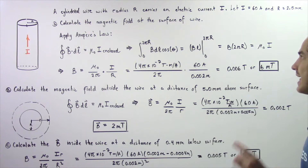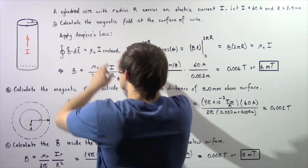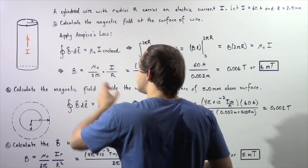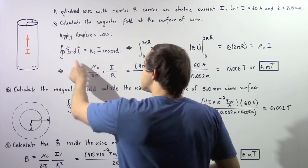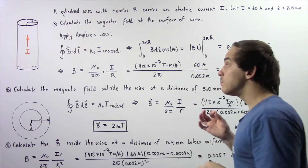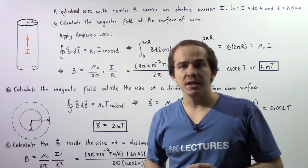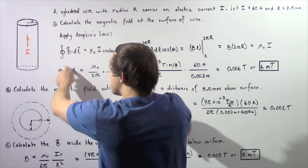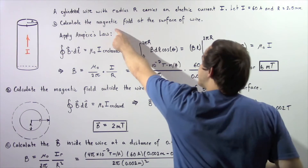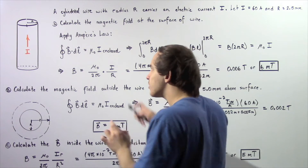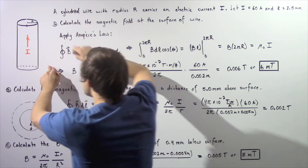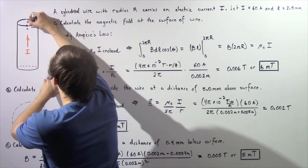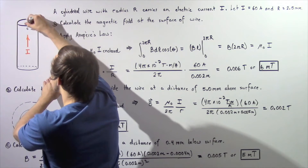Calculate the magnetic field at the surface of our wire. We apply Ampere's Law, which states: the closed integral of the dot product of the magnetic field and our infinitely small distance dL, in which our magnetic field B exists, equals the product of mu naught (the permeability of free space) and our enclosed electric current found inside this enclosed region of space. Because we're looking for the magnetic field at the surface, we choose our closed path to be along the surface of our wire.